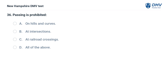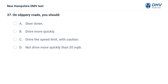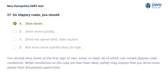Passing is prohibited: A) on hills and curves, B) at intersections, C) at railroad crossings, D) all of the above. The answer is D. Locations where it is unlawful and unsafe to pass another vehicle include hills, curves, intersections, and railroad crossings. On slippery roads, you should slow down. You should slow down at the first sign of rain, snow, or sleet, all of which can create slippery road conditions. Safety may require that you drive more slowly than the posted speed limit.